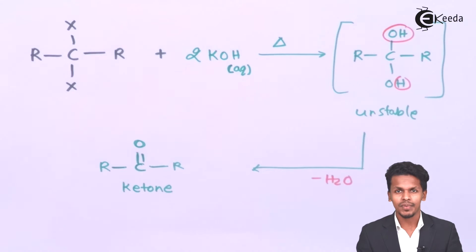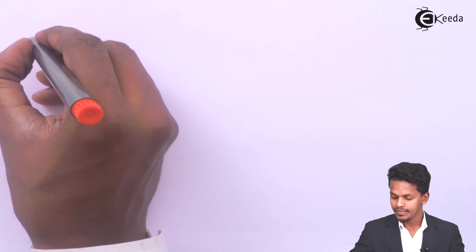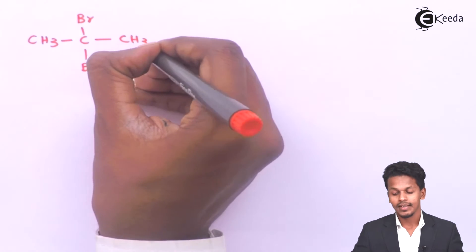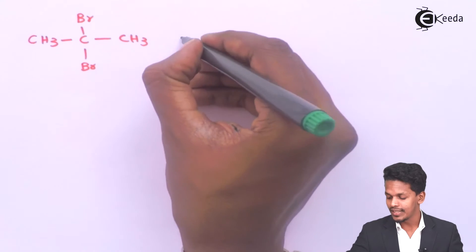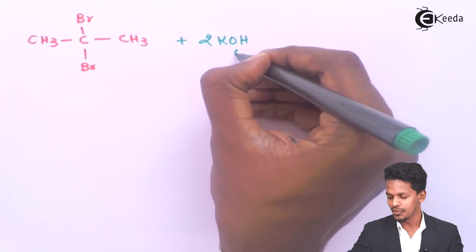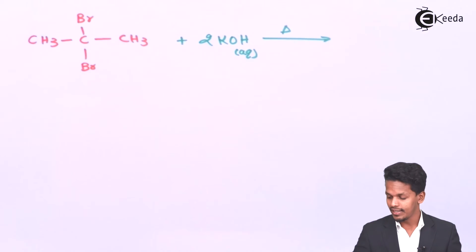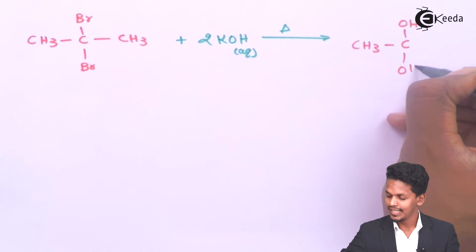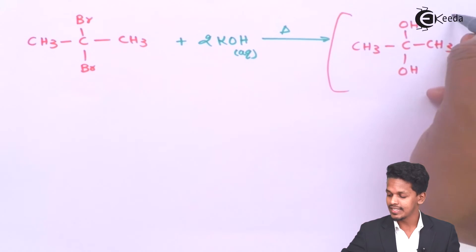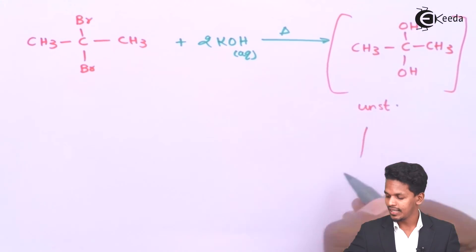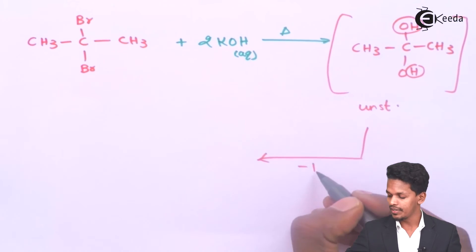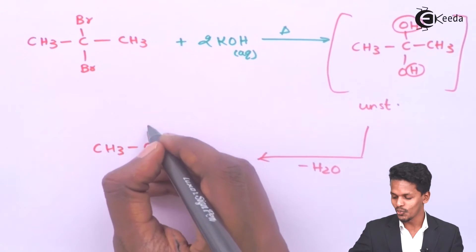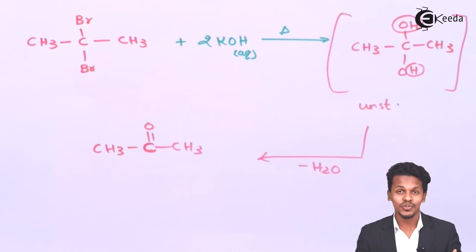For example, consider 2,2-dibromopropane reacting with 2 moles of KOH in aqueous solution. The intermediate product is CH₃C(OH)₂CH₃, which is unstable. The water molecule is eliminated, and the final product is CH₃COCH₃.